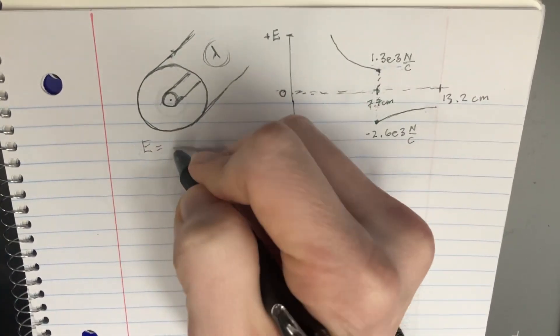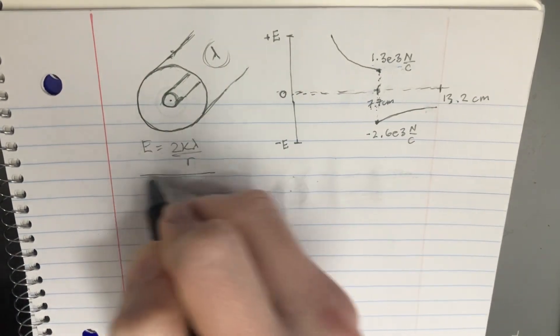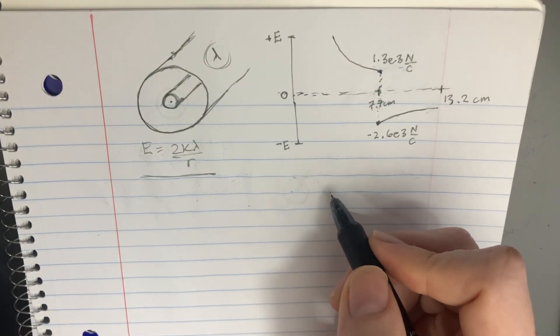So if we're dealing with cylinders, remember that the electric field is supposed to be 2k lambda over r. So this is going to be an important equation that we're going to want to use.